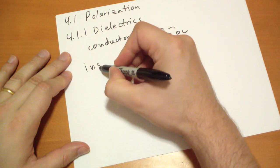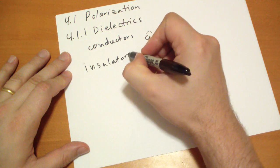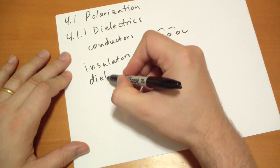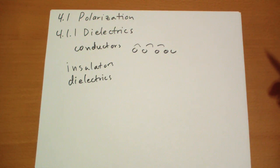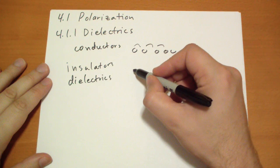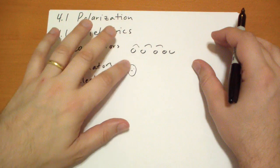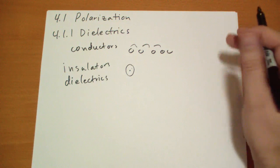The other kind of material is called insulators, or in the book, they call it dielectrics. They behave quite differently. They range from single atoms, which is like a point positive charge with the electron cloud surrounding it.